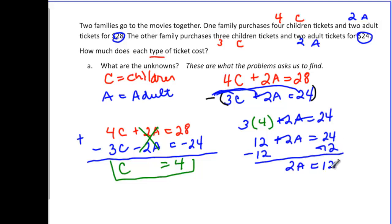And 2A is going to be equal to 12. And if you divide by 2, then we find out that A is equal to 6. So if I write a nice little sentence, I would say that a child ticket is $4, and an adult ticket is $6.